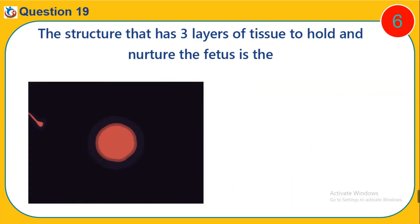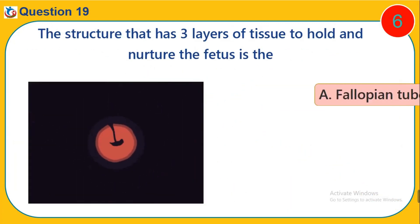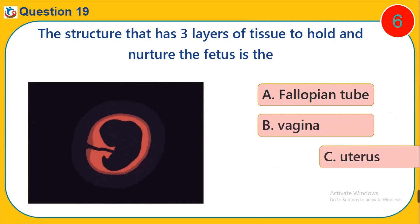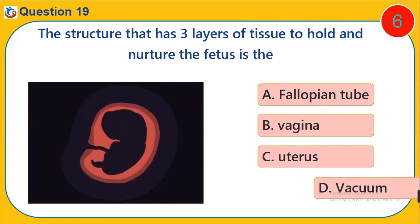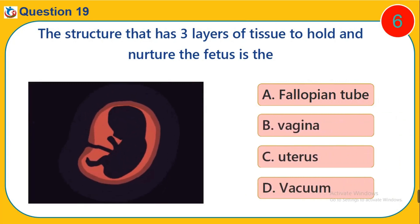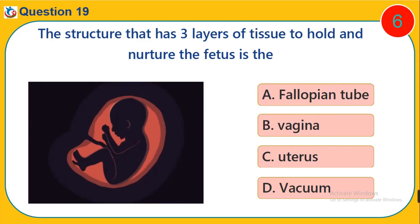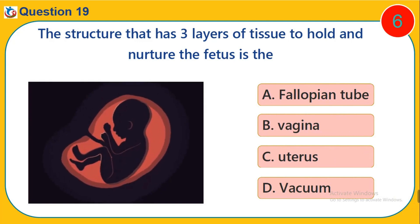Question 19. The structure that has three layers of tissue to hold and nurture the fetus is the. A. Fallopian tube. B. Vagina. C. Uterus. D. Vacuum.